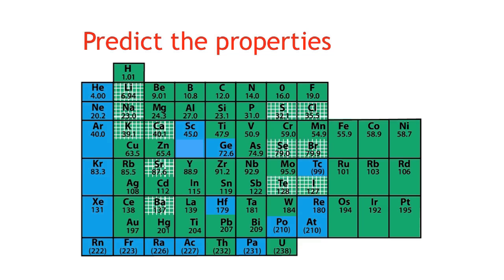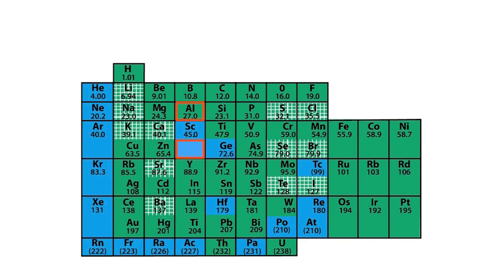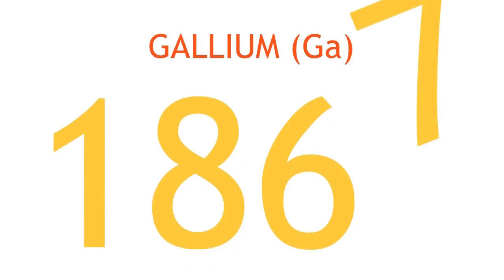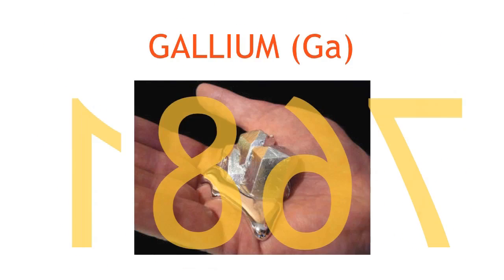And as more and more elements were discovered, his tables went through many redrafts. One of the gaps in Mendeleev's table was found below aluminium. He predicted the properties of this mystery element, and that it would have an atomic weight of around 68. In 1867, gallium was discovered, the mystery element.